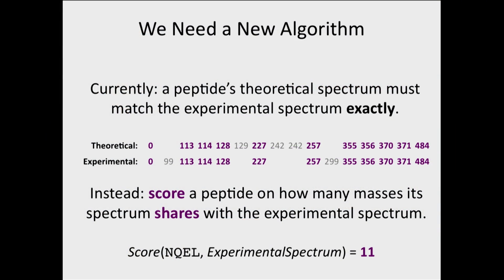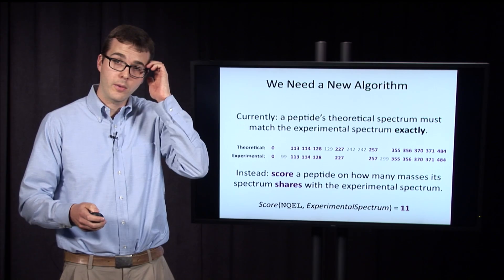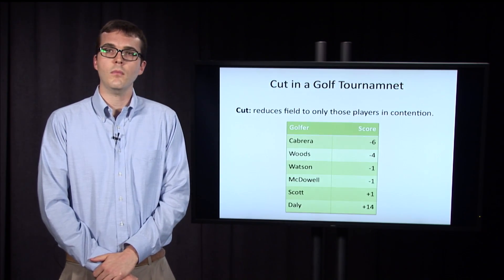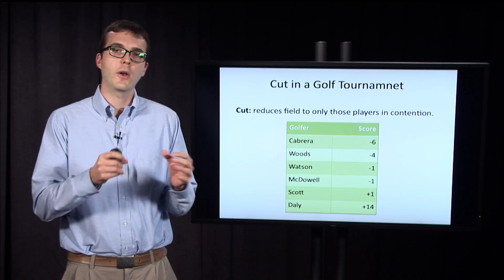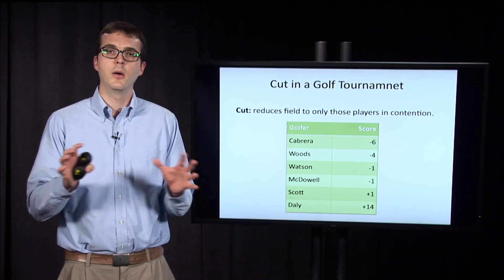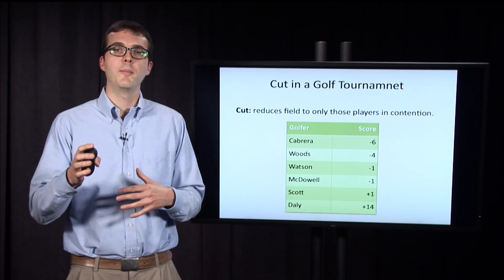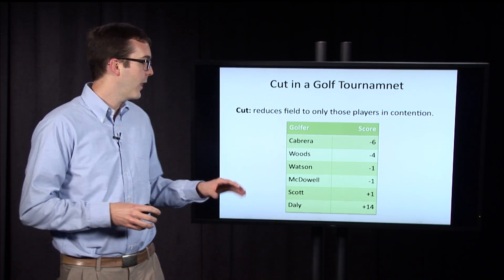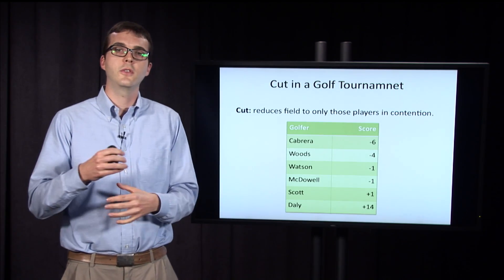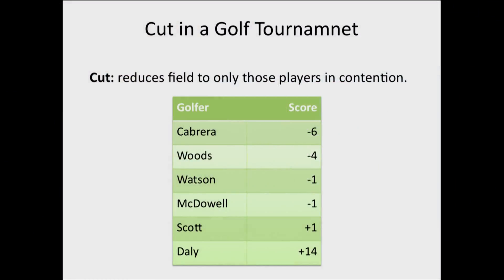We need to use this scoring function to say certain peptides are better than others and to modify the branch-and-bound algorithm that we have. The idea I want to use here is similar to something called a cut in a golf tournament. What the cut does is it reduces the field to only the players that are deemed to be in contention for the tournament.